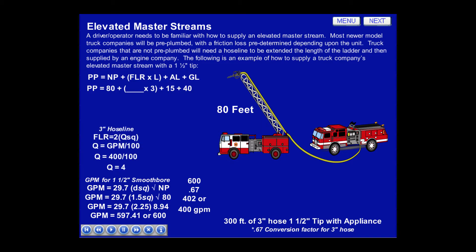To determine the friction loss rate for the 3-inch hose line, we'll use MLR equals 2Q squared. Q equals GPM divided by 100; using 400 GPM divided by 100, Q equals 4. The friction loss rate then equals 2 times 4 squared, or MLR equals 32 psi per 100 feet of hose.